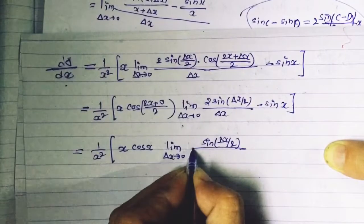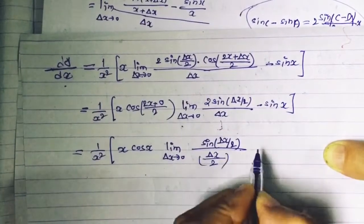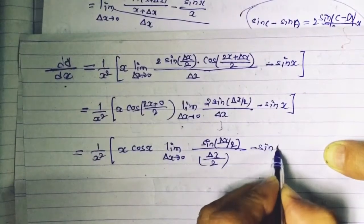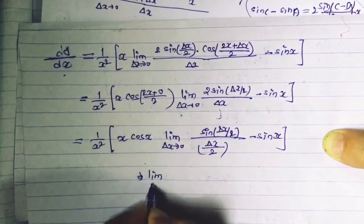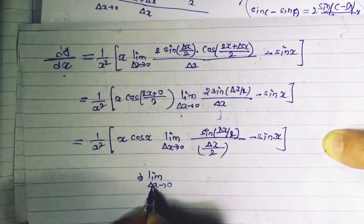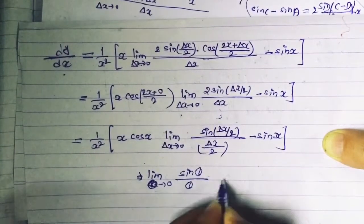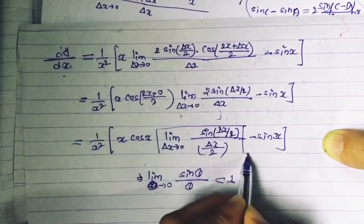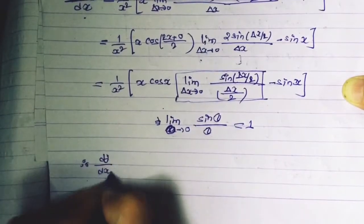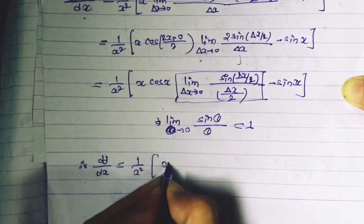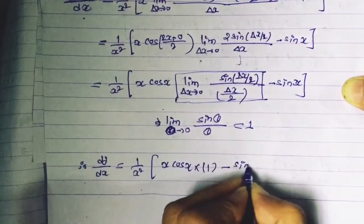This leaves: x · cos(x) · lim(δx→0) [sin(δx/2) / (δx/2)] − sin(x). Using the standard relation lim(θ→0) sin(θ)/θ = 1, the limit term equals 1.